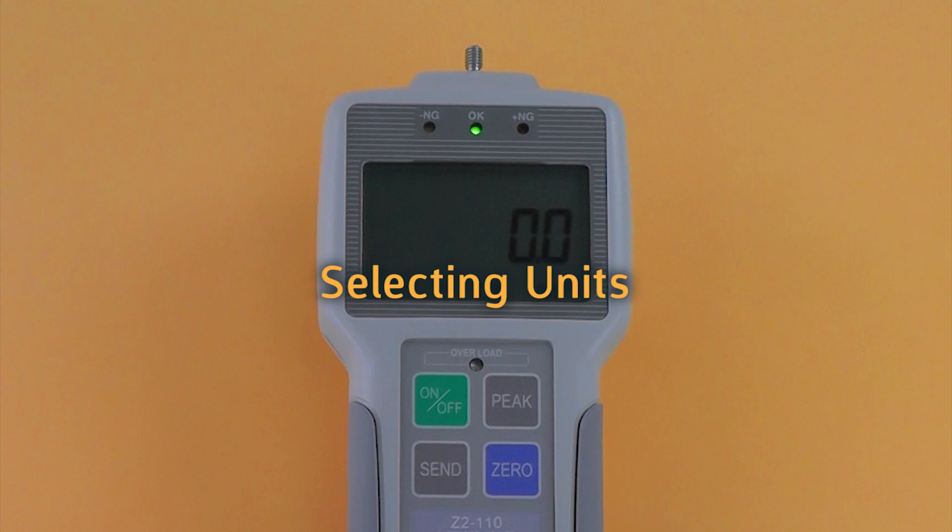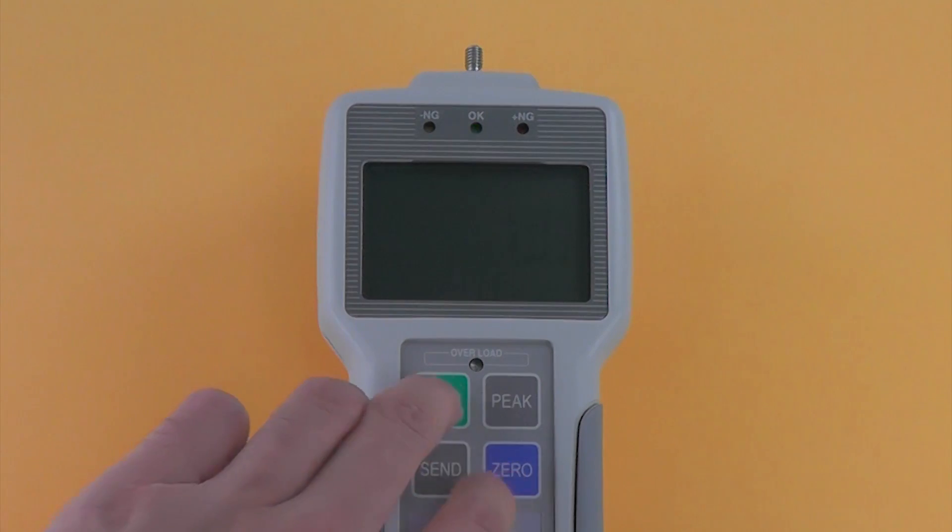Selecting units. Turn off the gauge. Press on while holding zero to enter power off programming. Press send to display U-03 with a unit. Then press peak or zero to cycle desired units. Press send to select. Press send once more to exit power off programming mode.